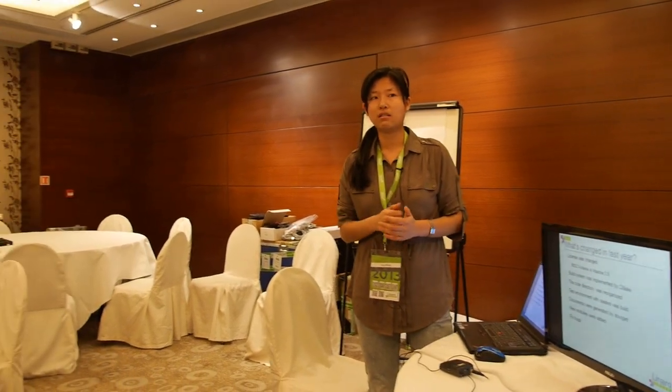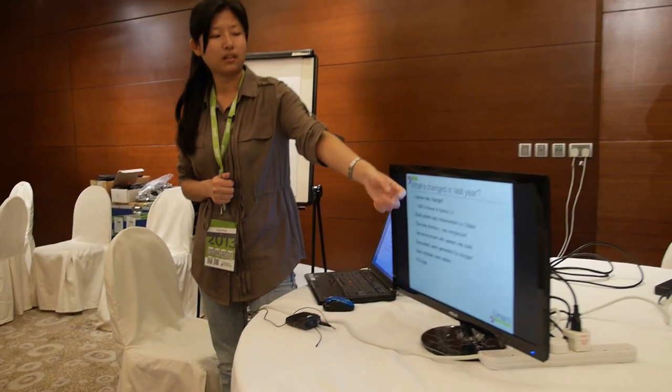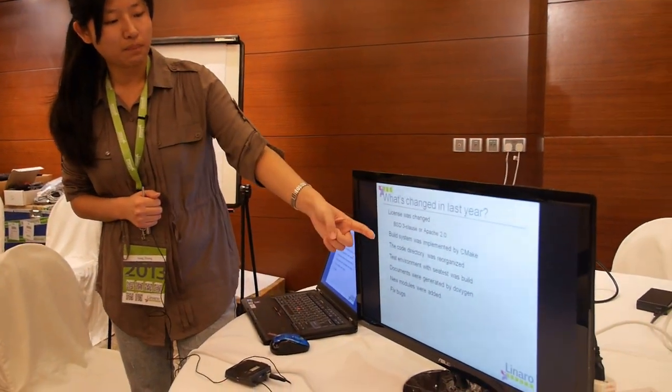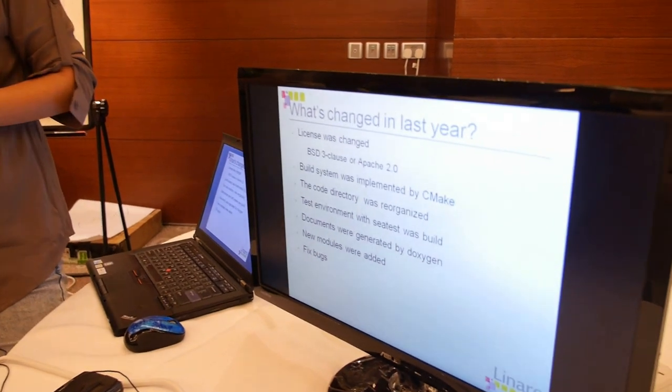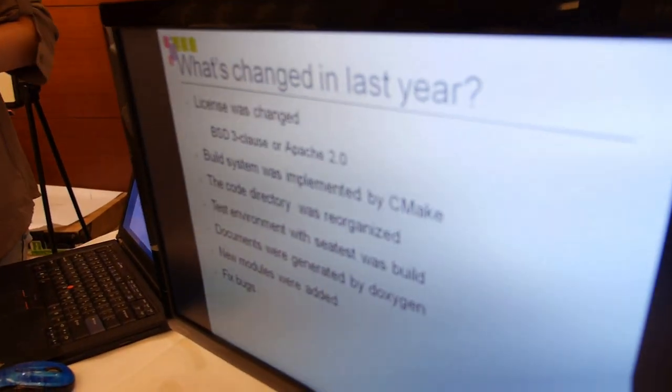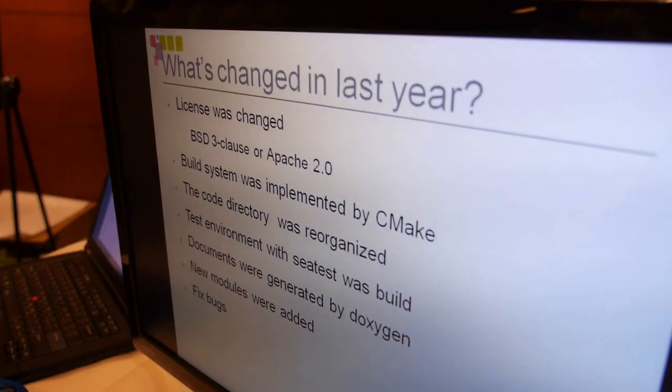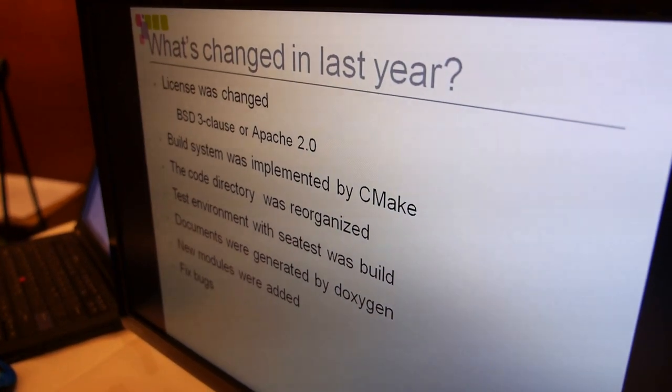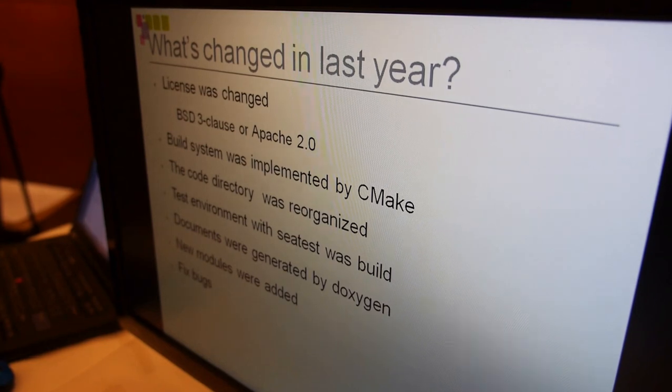What has changed since last year? To resolve license compatibility problems, we changed to the BSD three-clause license. Currently, the NE10 library is licensed under both BSD three-clause and Apache 2.0, so you can use either of them. The build system was implemented using CMake. CMake is a build system that allows you to implement cross-platform builds easily.